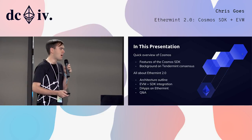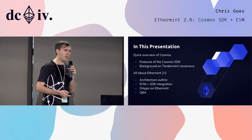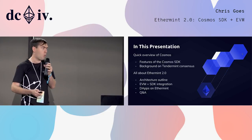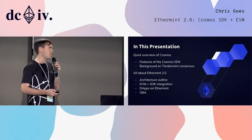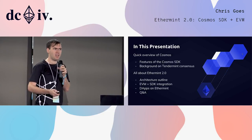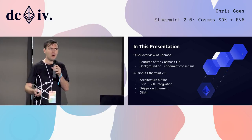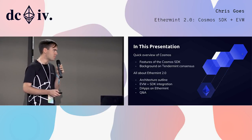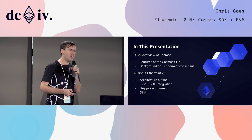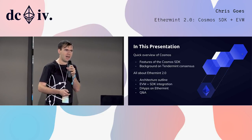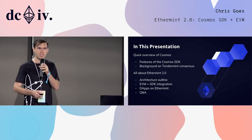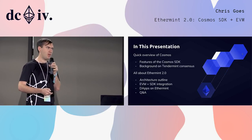Then we'll talk all about Ethermint 2.0. I'll outline the architecture, the changes we made from Ethermint 1.0, and why. I'll talk about how the EVM and the SDK can work together to give you native code and EVM contracts all in one blockchain. Finally, I'll talk about how you can move your dApps, or move parts of your dApps, onto the Ethermint chain while preserving seamless UX, and I'll take any questions.